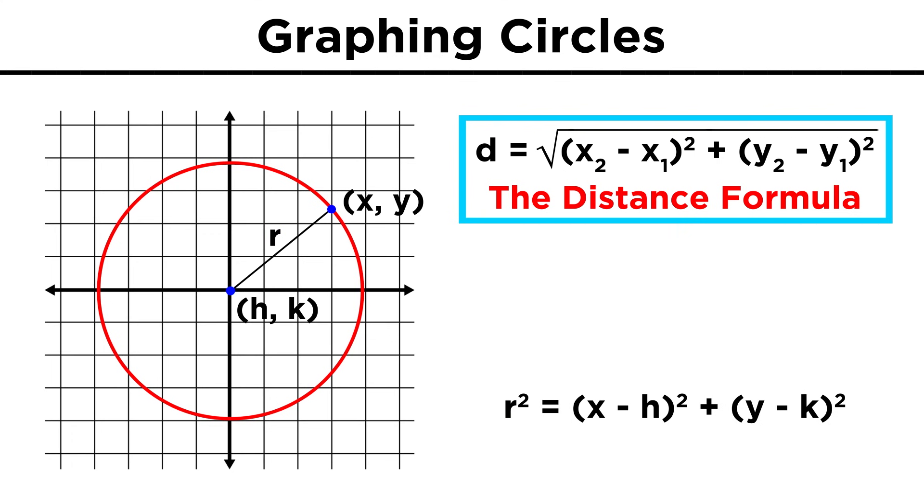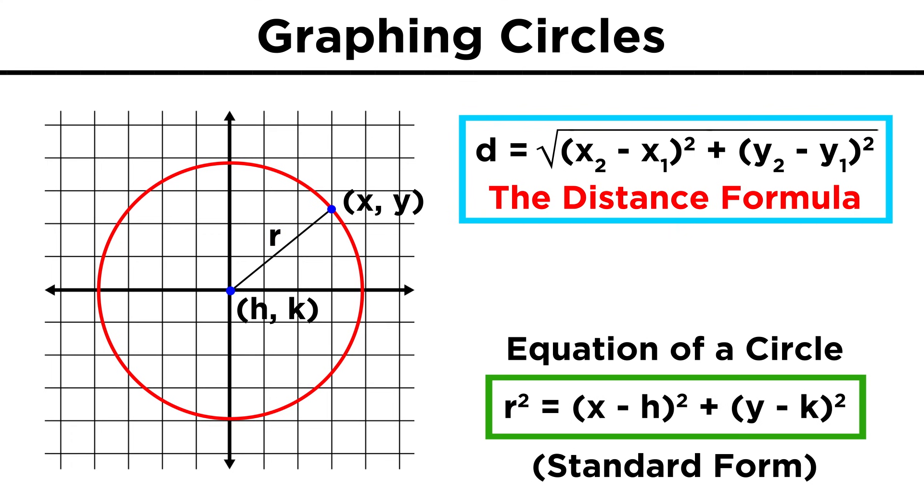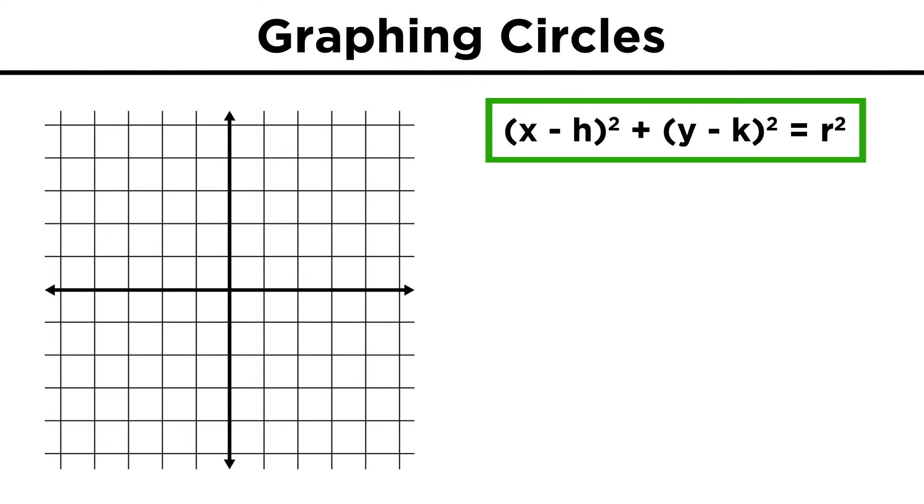All we have to do is square both sides, and we get the standard form for the equation of a circle, with three terms, all squared. We can use this understanding to graph a circle given an equation.